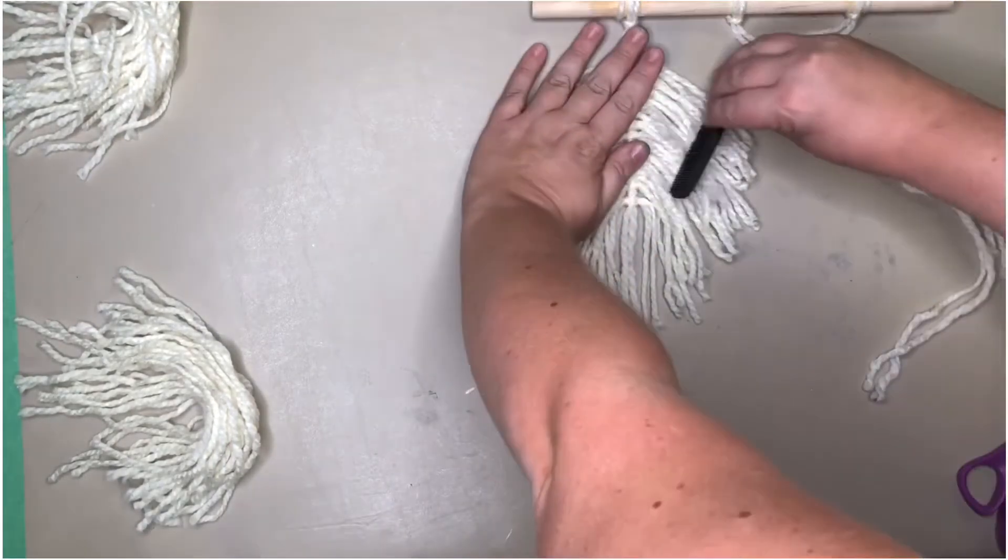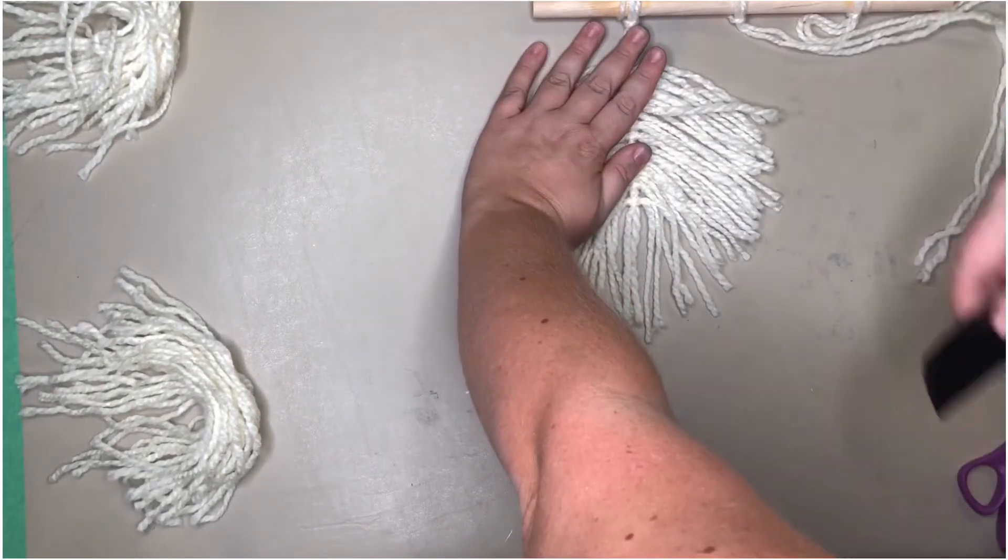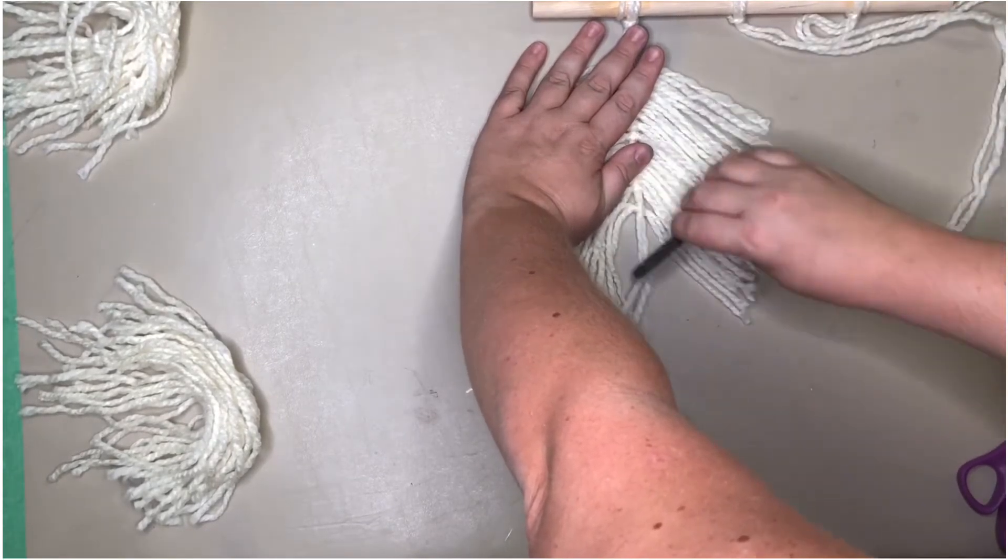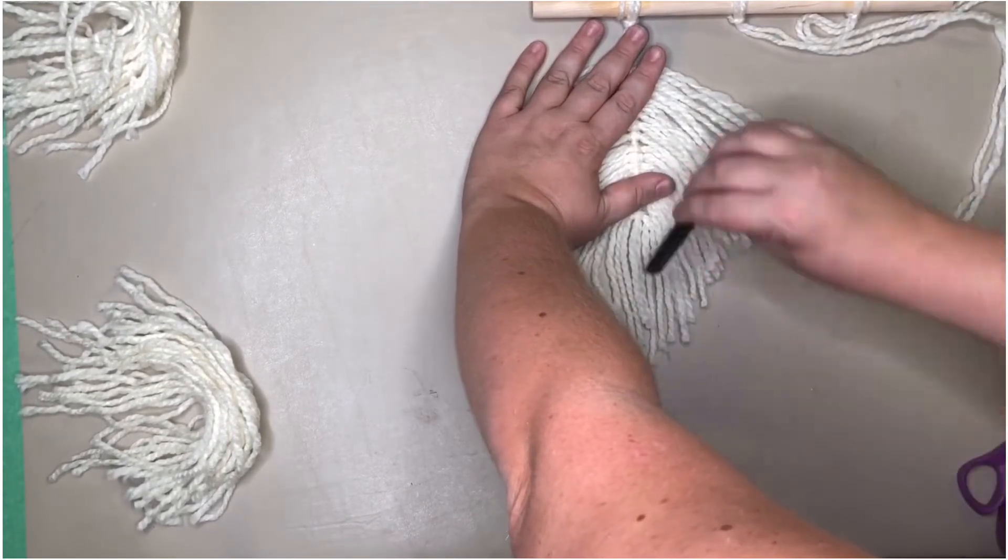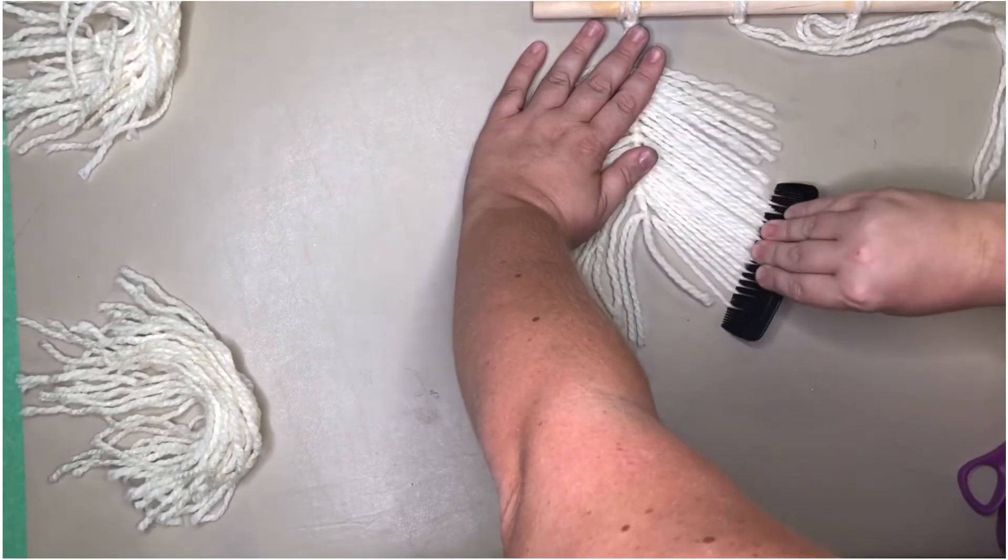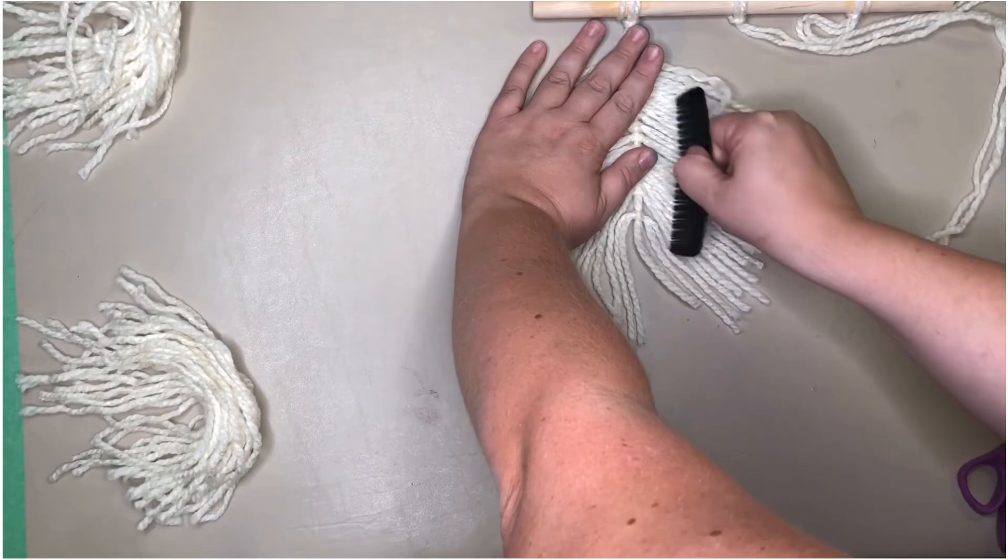Once you get to the end, you want to straighten things out and grab a comb just to brush the edges out, kind of make things feel like they're together and laid out. Don't use too much pressure. It just fluffs the yarn out nicely.